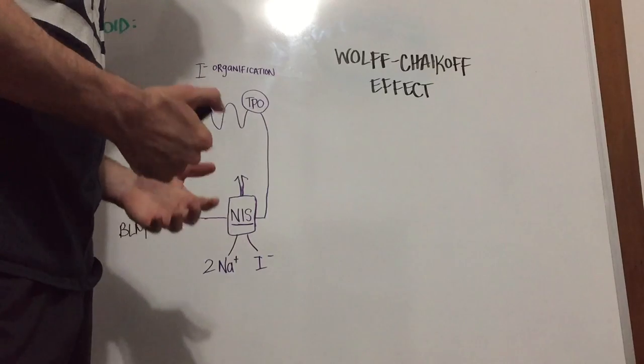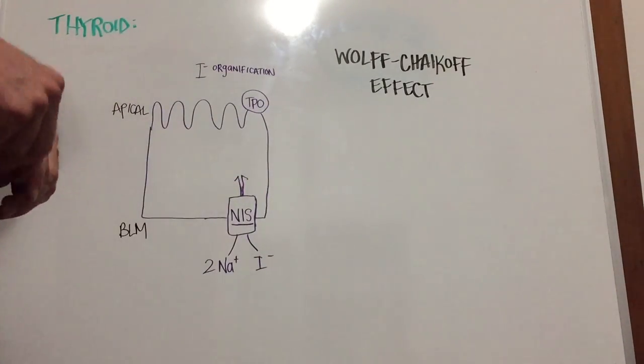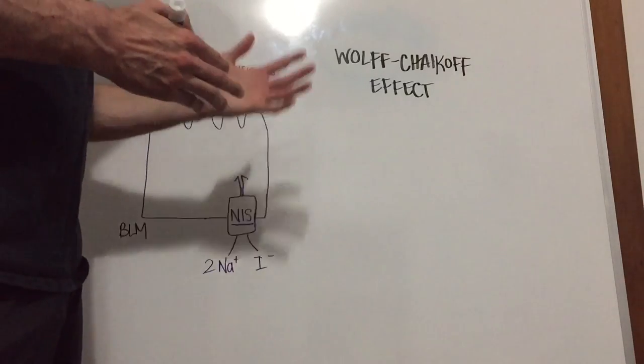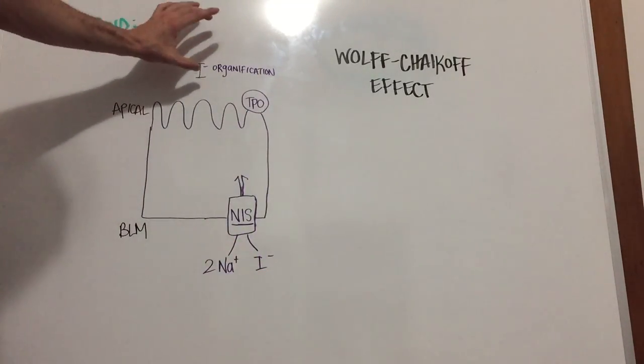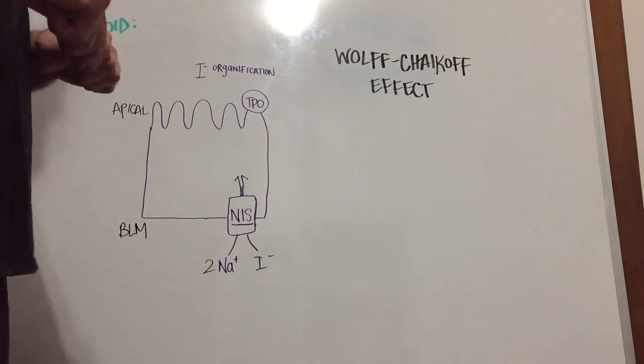This is kind of important if you're going to do like a thyroidectomy where you want to decrease the amount of blood flow there. So the Wolff-Chaikoff effect, exceedingly high levels of iodide, is going to decrease the organification that happens in the lumen and therefore decrease T4 and T3.